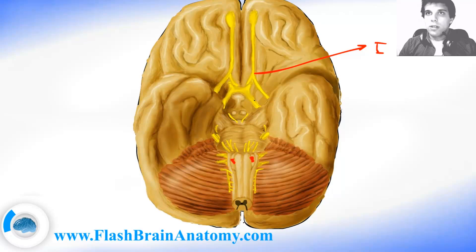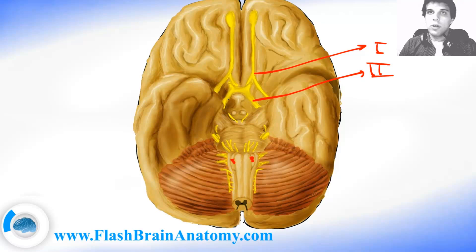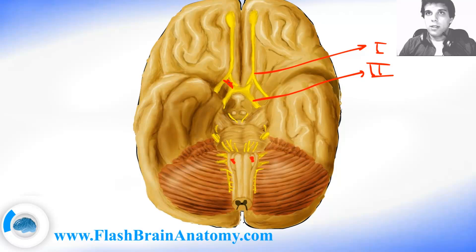The second cranial nerve is the optic nerve. This part over here is called the optic chiasm — it is the place where nerves from the left and right side exchange fibers. From here it is not the optic nerve but the optic tract.